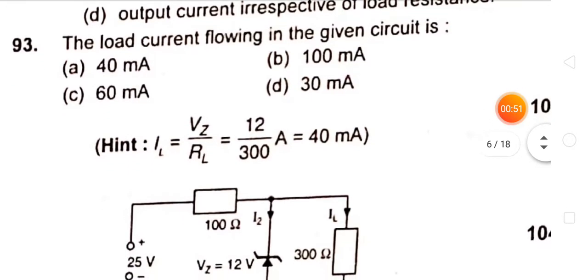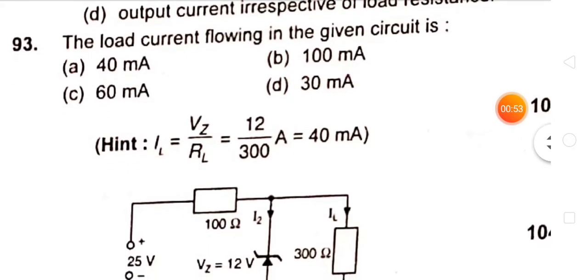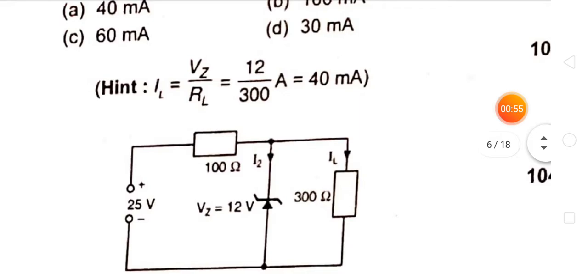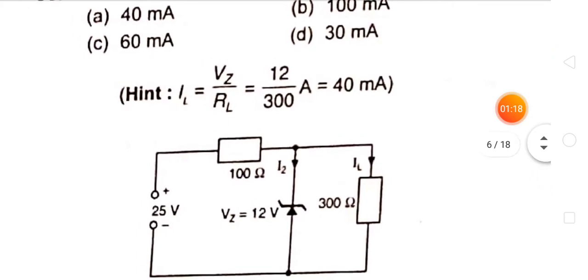The load current flowing in the given circuit is calculated. Here IL and here 300 ohms. We have a Zener diode. The output voltage is constant. So 12 by 300 is equal to 40 milliamperes.